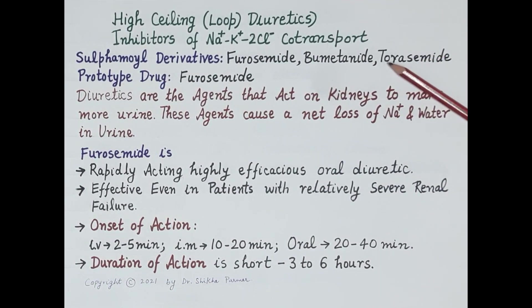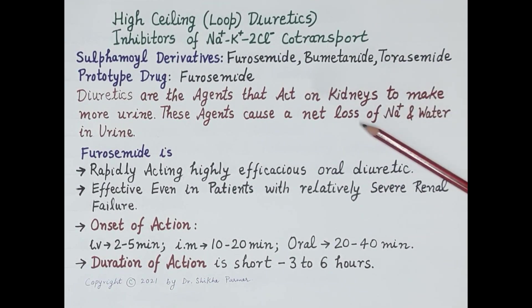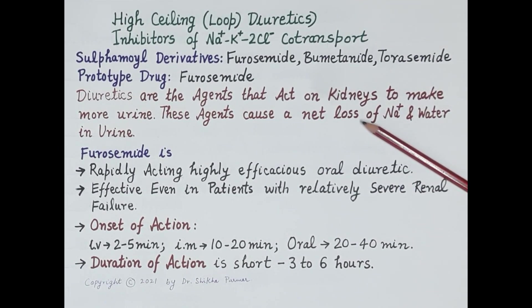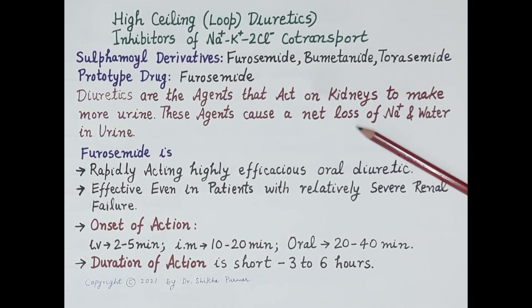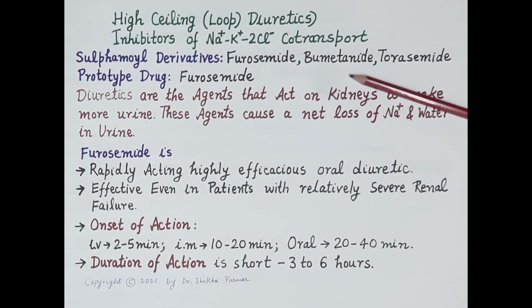High ceiling loop diuretics are sulfonamide derivatives. Examples include furosemide, bumetanide, and torsemide; the prototype drug is furosemide. These agents cause a net loss of sodium and water in the urine by preventing their reabsorption from the tubular lumen into the peritubular capillaries. Furosemide is a loop diuretic whose site of action is the ascending limb of the loop of Henle.